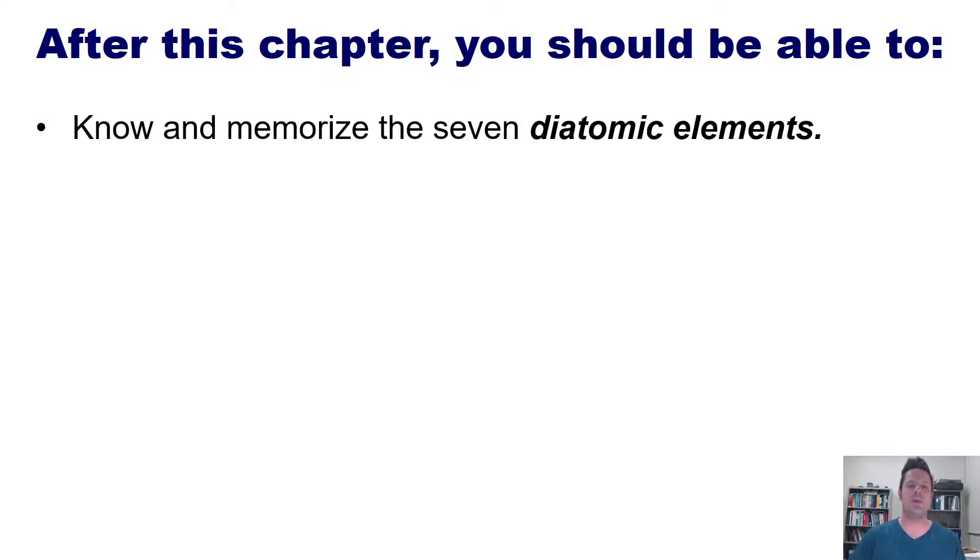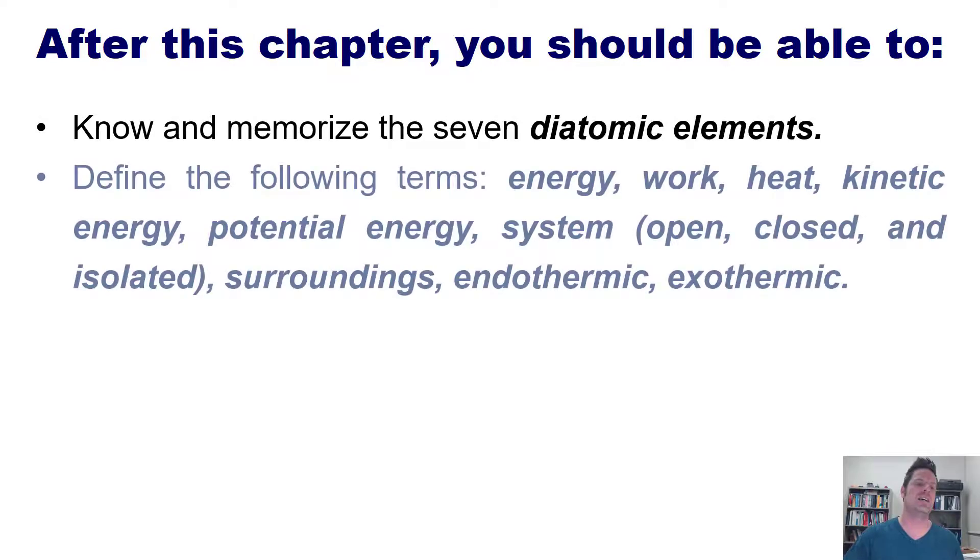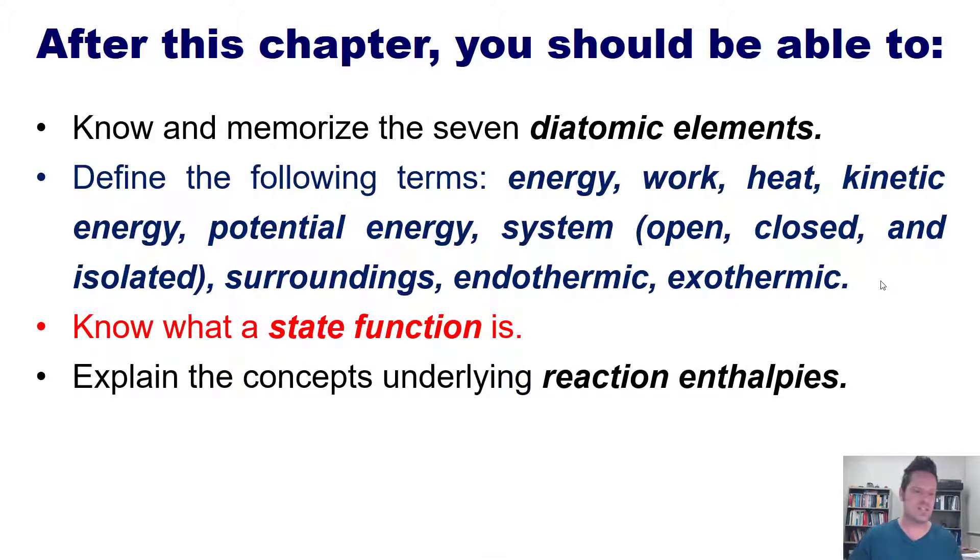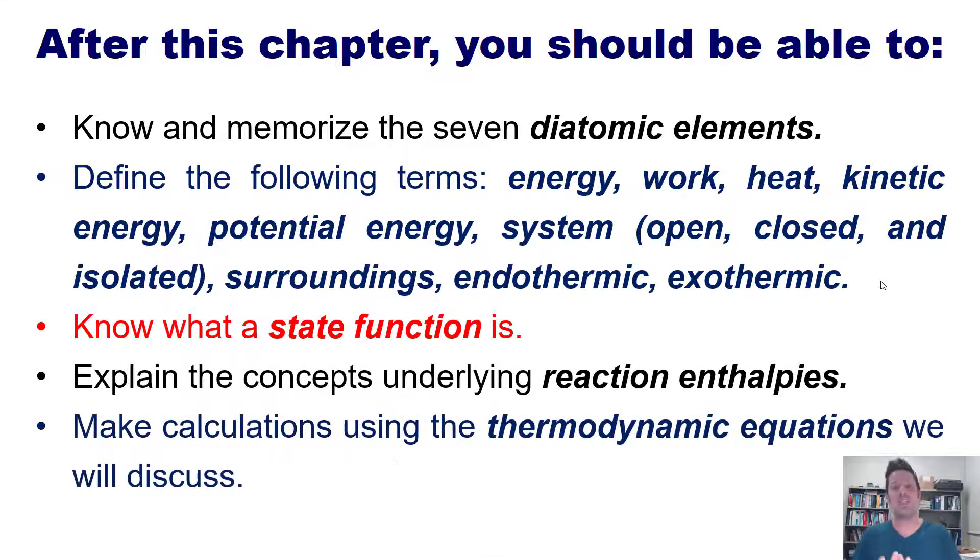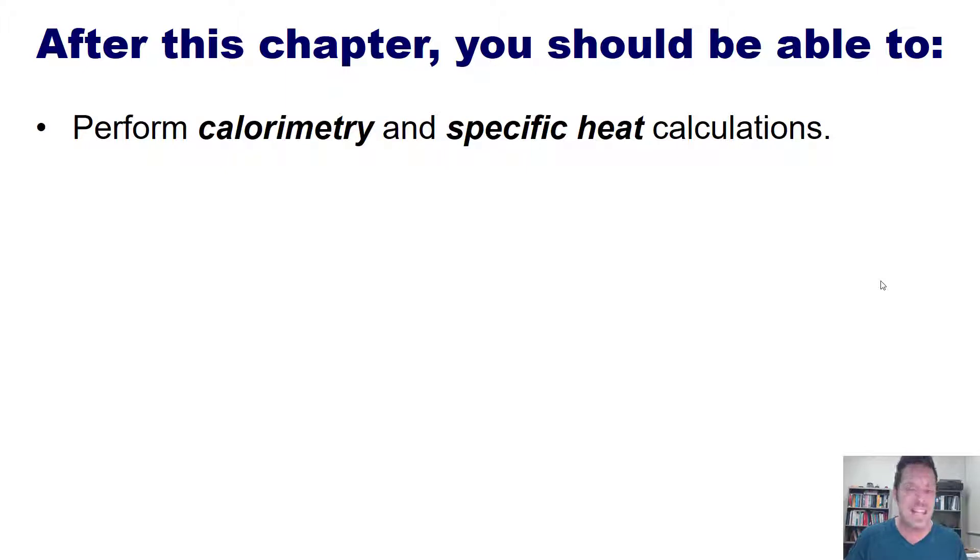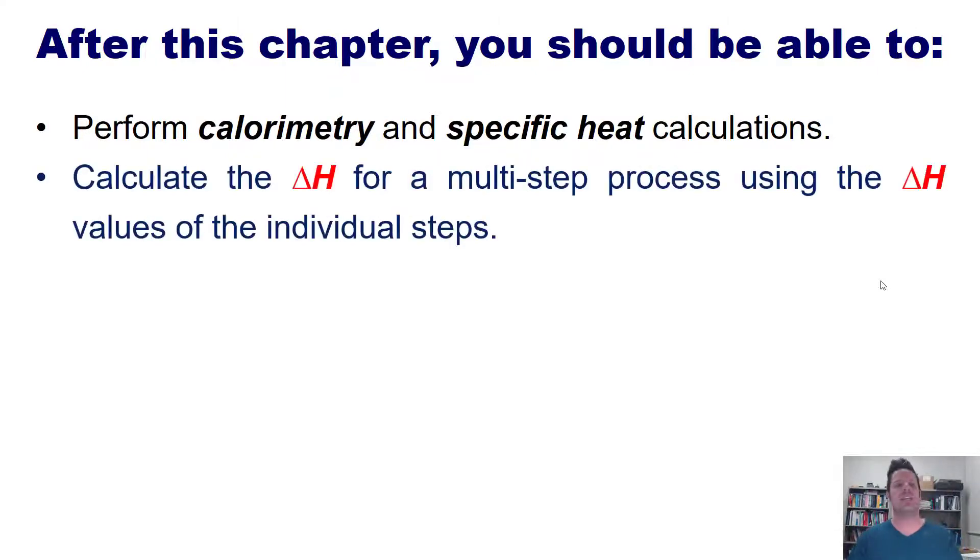you should be able to know and memorize the seven diatomic elements, define the following vocabulary terms that I will not read to you here because you can read as well as I can, know what a state function is, explain the concepts underlying reaction enthalpies, and make calculations using the thermodynamic equations we will discuss. In addition to this, you will also be able to perform calorimetry and specific heat calculations, calculate the delta H for a multi-step process using the delta H values of the individual steps, and use enthalpies of formation to calculate reaction enthalpies.